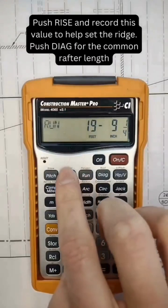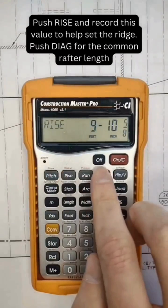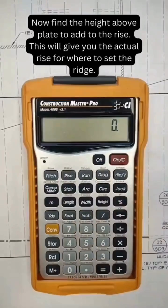Now that we have the actual run, we can find the actual rise and diagonal length for the rafter cut.